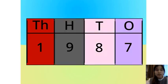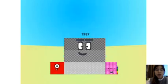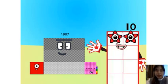Let's see this in block form, shall we? As you can see, this number is 1,900s, 8 tens, and 7 ones.